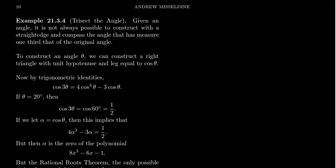In this video, we will prove that the classic geometric problem of trisecting the angle is impossible to solve. That is, given any angle, it is not always possible to construct with a straight edge and compass alone an angle whose measure is one-third of the original angle.